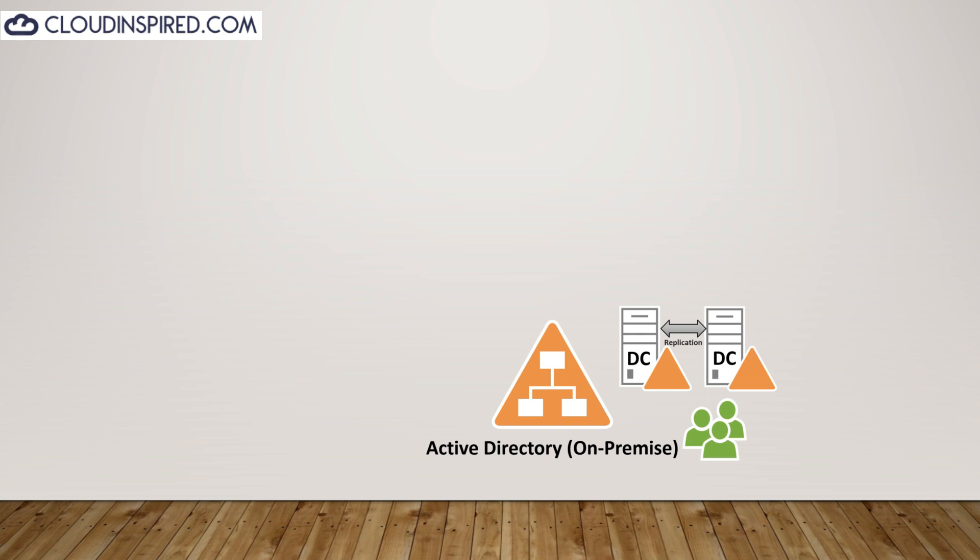Each site in Active Directory contains one or more subnets which identify the range of IP addresses associated with that site. By mapping the IP address of a DC to a subnet, Active Directory knows which DCs are in which site, and connections are configured between sites to ensure that Active Directory objects are replicated between them.